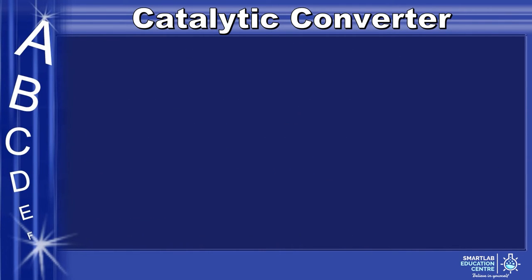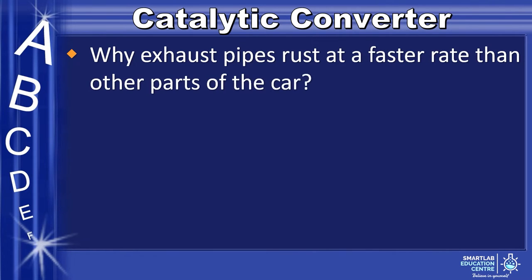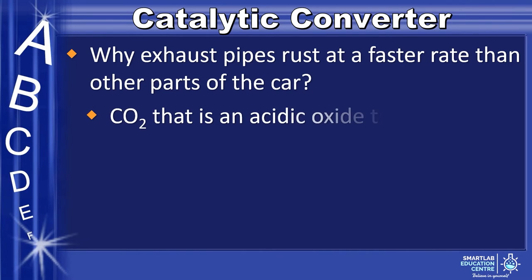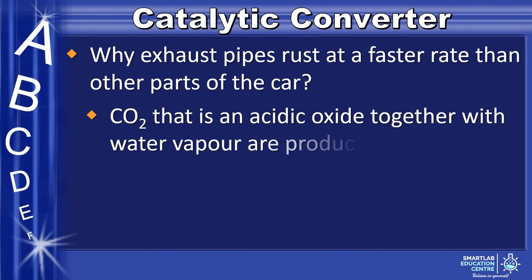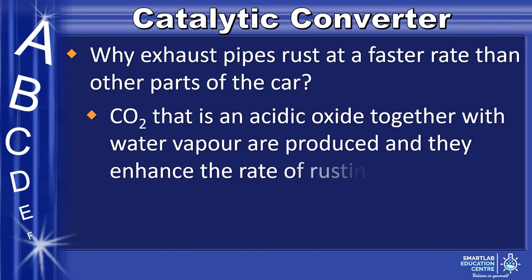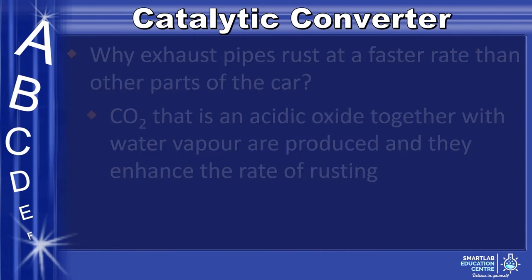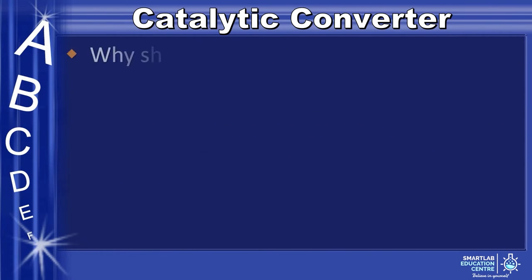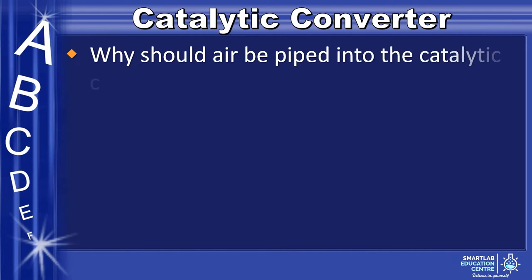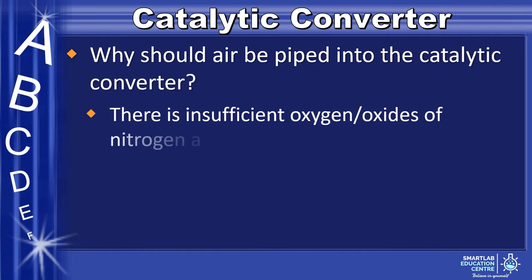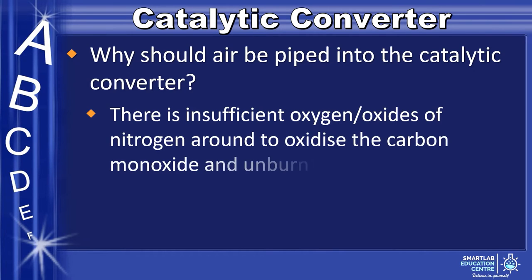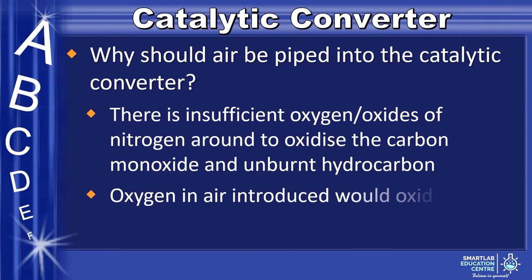A question asked is why do exhaust pipes rust at a faster rate than other parts of the car? It is because carbon dioxide, which is an acidic oxide, together with water vapor are produced, and they enhance the rate of rusting. Another question is why should air be piped into the catalytic converter? It is because there is insufficient oxygen or oxides of nitrogen to oxidize the carbon monoxide and unburnt hydrocarbons. Therefore, the oxygen in the air introduced would oxidize the carbon monoxide and unburnt hydrocarbons.